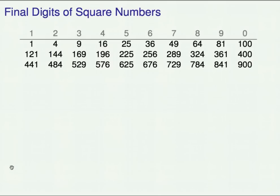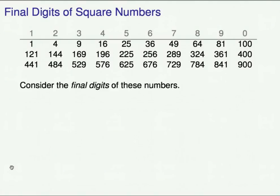Here I've listed the first 30 square numbers. We're going to look at the final digits of these numbers. If you look at the first black row of this table, the first 10 squares, the final digits are 1, 4, 9, 6, 5, 6, 9, 4, 1, 0.